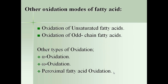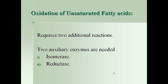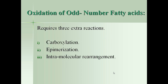Other modes of fatty acid oxidation include oxidation of unsaturated fatty acids, odd-chain fatty acids, alpha-oxidation, omega-oxidation, and peroxisomal oxidation. Unsaturated fatty acids require two additional reactions: isomerases convert cis-conformation into trans-conformation — for a monounsaturated fatty acid — and reductases are auxiliary enzymes used to convert cis-conformation into trans-conformation for a polyunsaturated fatty acid. The remaining reactions are the same as beta-oxidation.